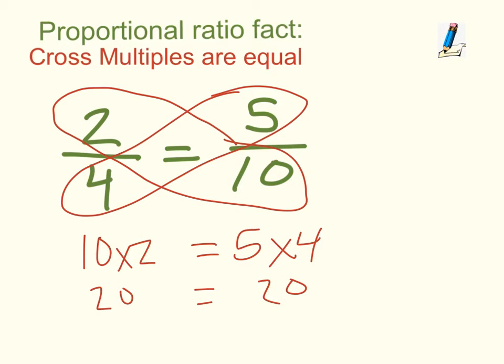This is a fact that's true with every single equivalent fraction that exists. We can call them fractions, we can talk ratios—anything that we know are proportional or equal to each other will have this fact that if I multiply the opposite cross multiples together, they'll be equal to each other. We're going to use that fact to help us with fish method.